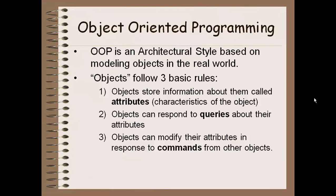Now, the objects in our program are going to follow three basic rules. The first rule is that each object must store information about themselves — we call these things attributes, and they are basically the characteristics of an object. The second rule is that each object can respond to queries or questions about their attributes. The third is that objects can modify their attributes in response to commands from other objects. We call these last two rules services — answering questions about themselves and changing attributes based on commands.